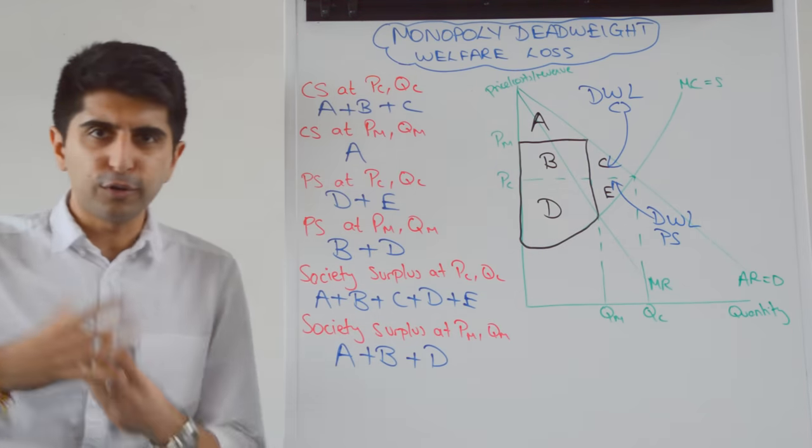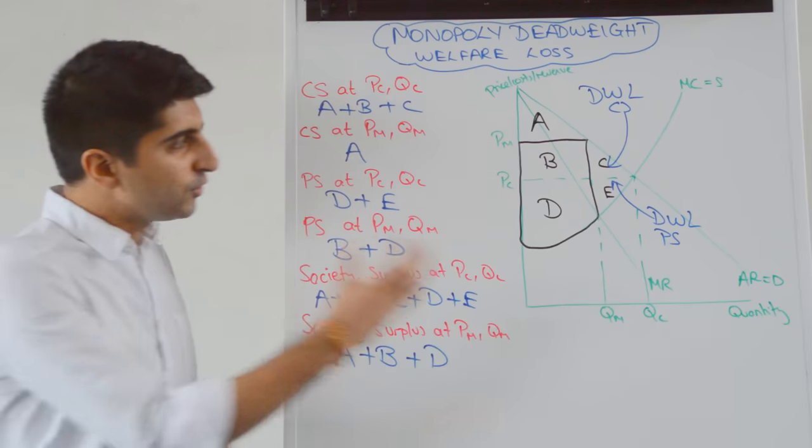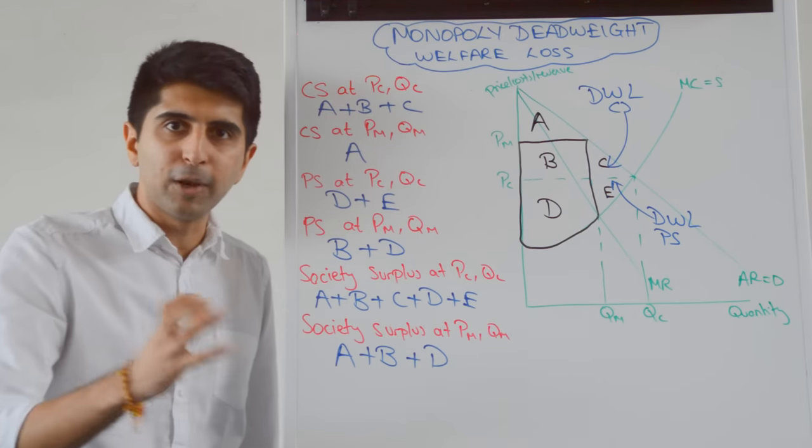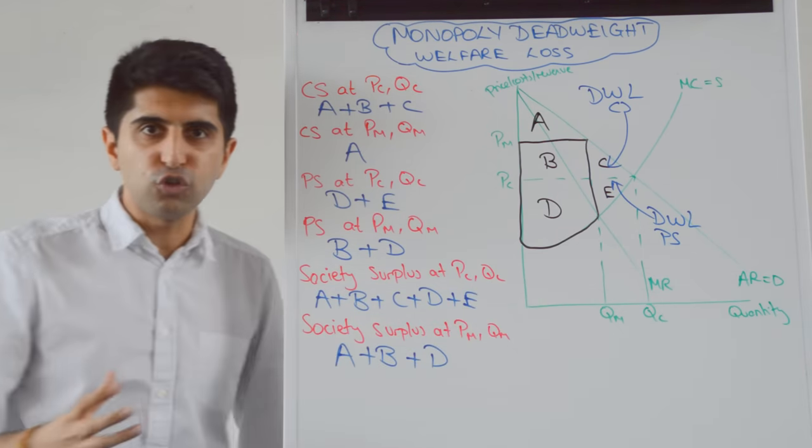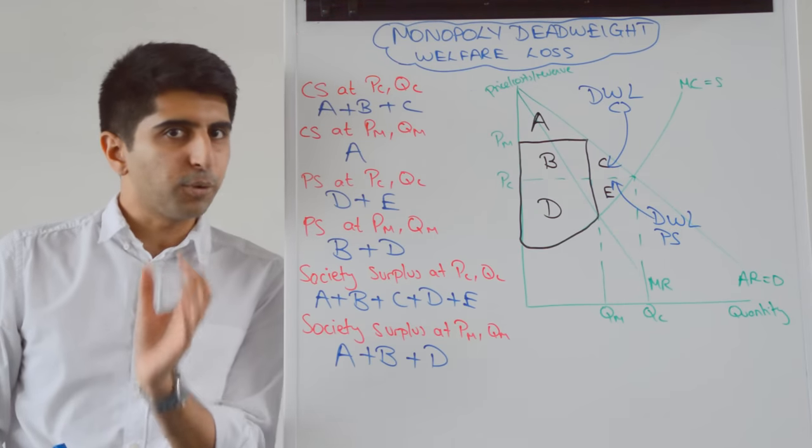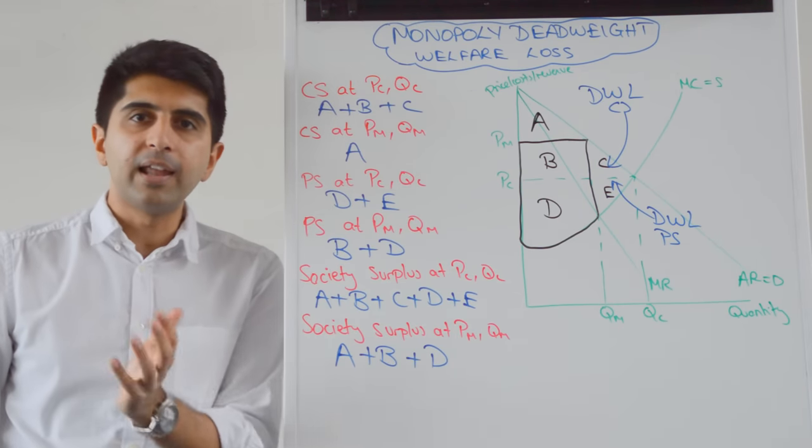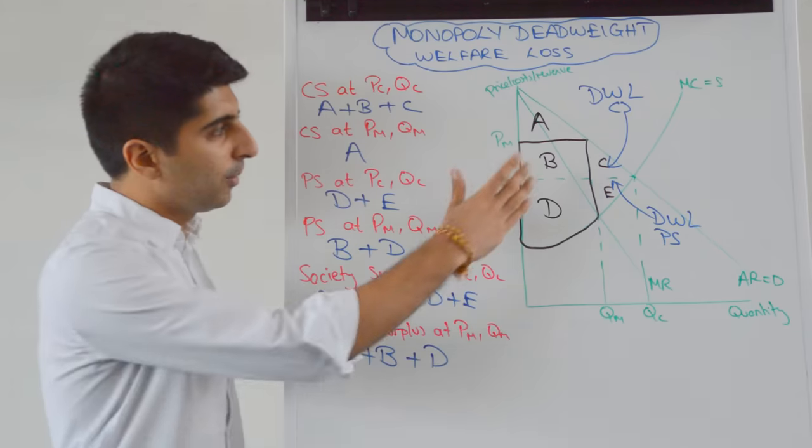And this is why monopolies are so bad for society. They reduce the total level of society surplus. We are not too concerned about the loss of producer surplus because producers are gaining significantly with higher monopoly profit. The biggest concern here is a huge loss of consumer surplus. Consumers being exploited drastically via higher levels of pricing that monopolies charge.